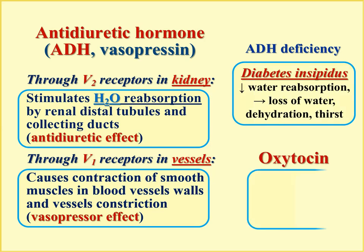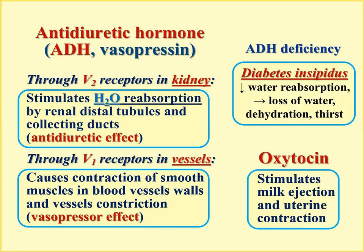Oxytocin stimulates milk ejection and uterine contraction using the phospholipase C pathway — IP3 formation with release of calcium followed by contraction of the corresponding smooth muscles.